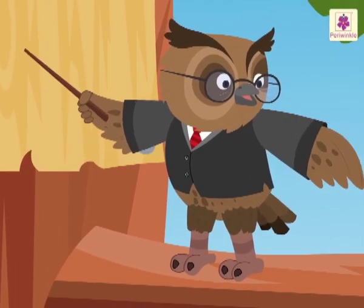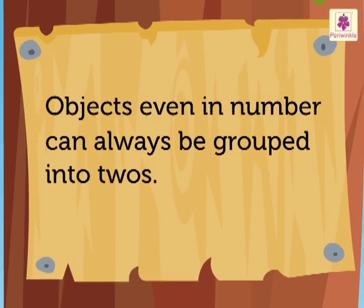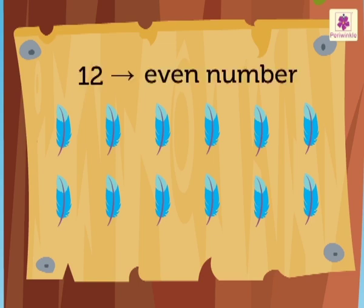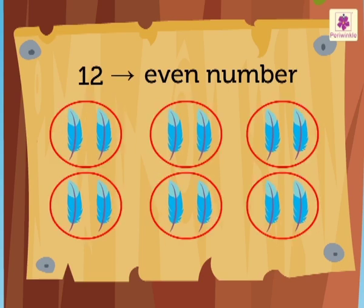Did you know? Objects even in number can always be grouped into 2's. Let me show you how. There are 12 feathers. We know that 12 is an even number. Hence, these 12 feathers can be grouped into 2's as shown.